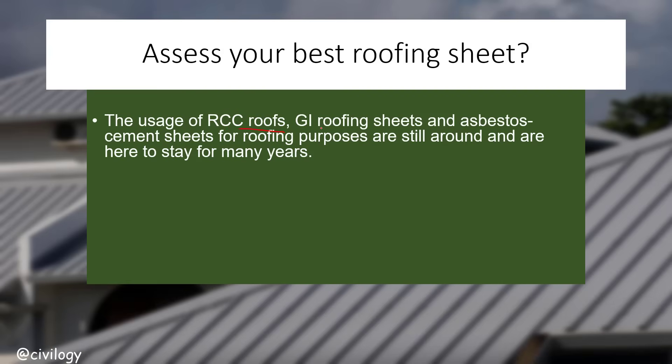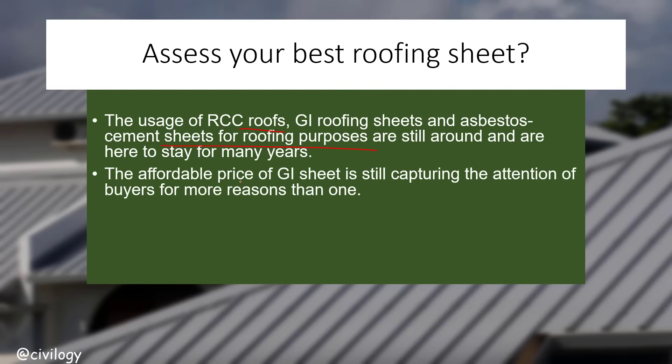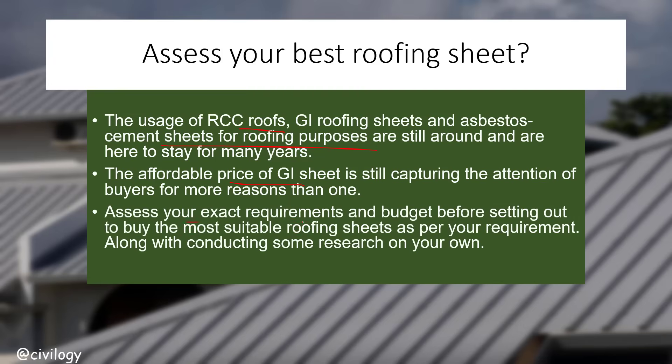Now let's discuss criteria for choosing the best roofing material. RCC roofs, galvanized iron roofing sheets, and asbestos cement sheets are still widely used and here to stay. The affordable price of GI sheet continues to capture buyers' attention. Assess your exact requirements and budget before buying, and conduct some research on your own to find the most suitable roofing sheets.